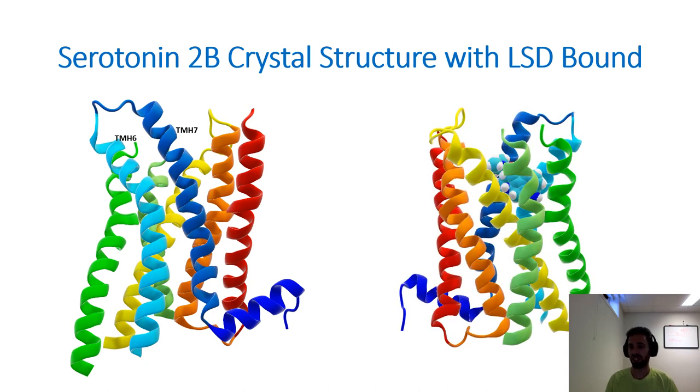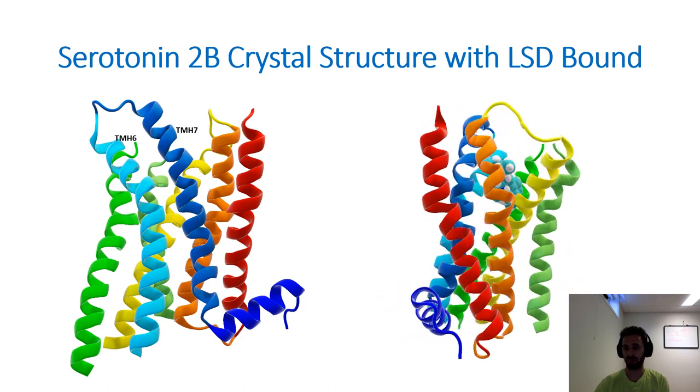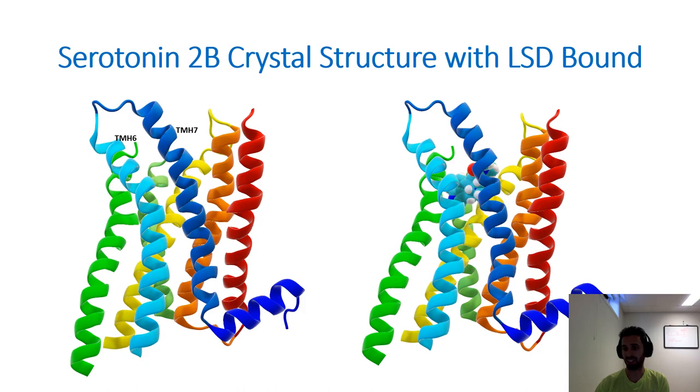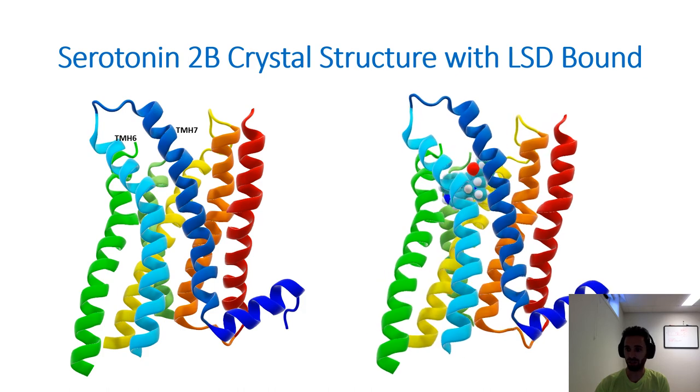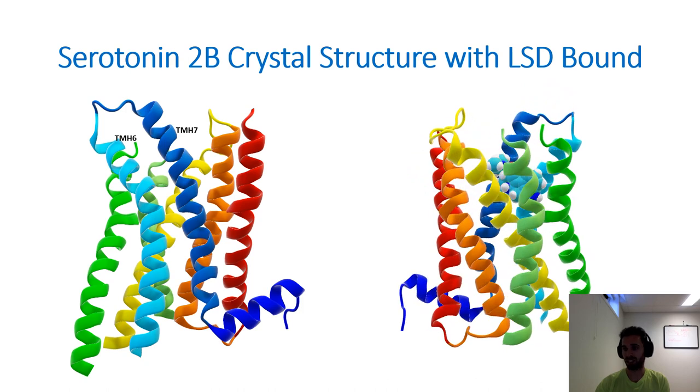Now here is that same receptor with LSD bound to it. The LSD molecule is in this light blue color with these white balls on it that are hydrogen atoms. And if we spin the receptor, we can see a much better view of the drug sitting inside of the receptor from the back. And then we can spin it to its original position to see how it sits inside of the receptor.